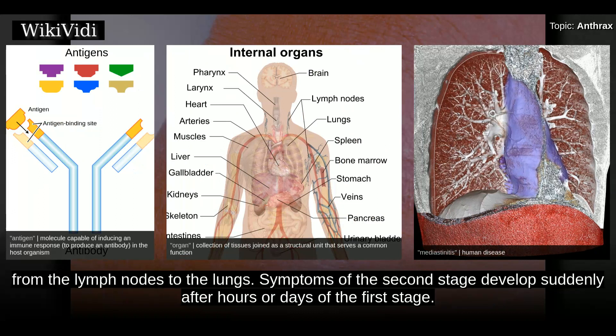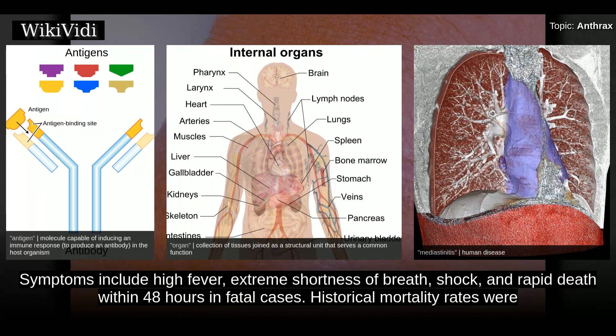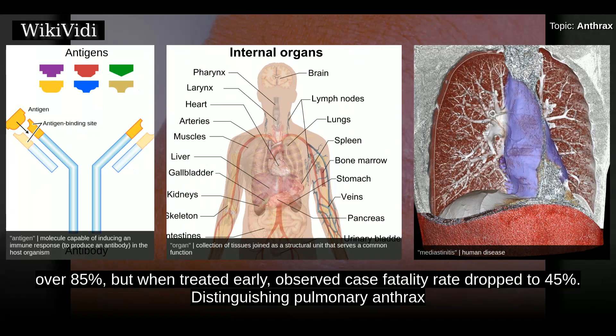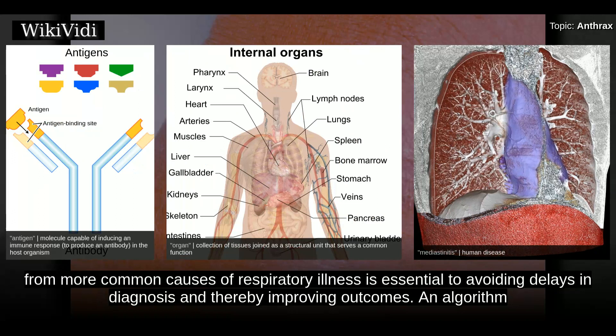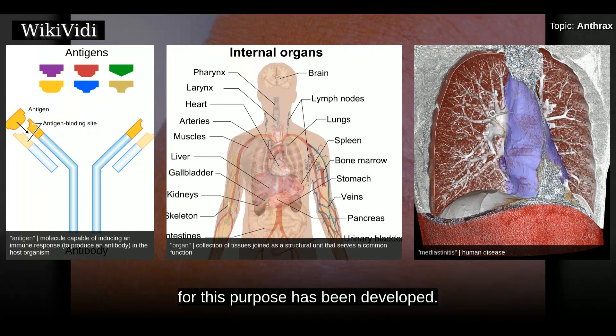The second stage occurs when the infection spreads from the lymph nodes to the lungs. Symptoms develop suddenly after hours or days of the first stage, and include high fever, extreme shortness of breath, shock, and rapid death within 48 hours in fatal cases. Historic mortality rates were over 85%, but when treated early, observed case fatality rate dropped to 45%. Distinguishing pulmonary anthrax from more common causes of respiratory illness is essential to avoiding delays in diagnosis and improving outcomes. An algorithm for this purpose has been developed.